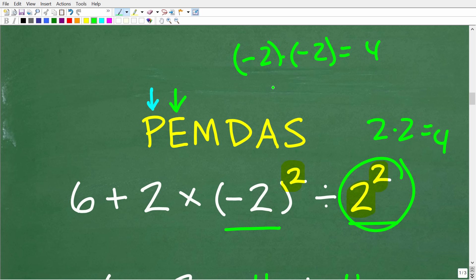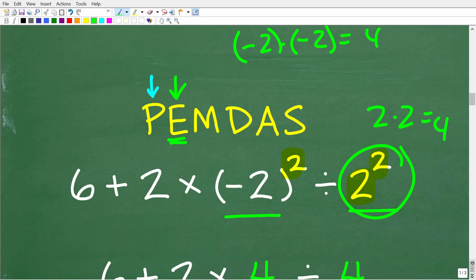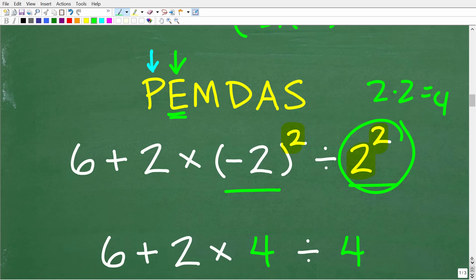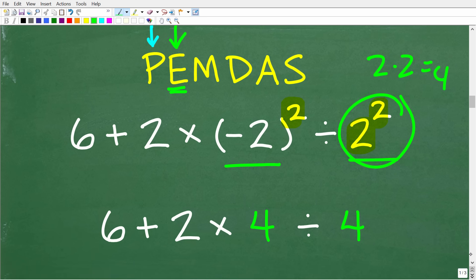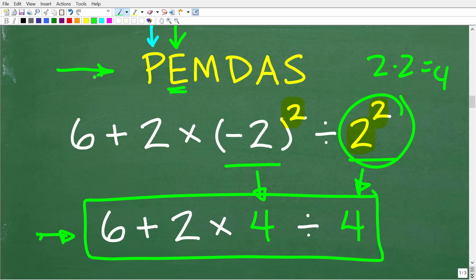So negative times negative is a positive. So again, we're just going to take this one step at a time, but on this step, we have 2 powers. So let's go ahead and write the results of negative 2 squared and 2 squared here. So now our problem is 6 plus 2 times 4, which is the result of negative 2 squared, divided by 2 squared, which is also 4.